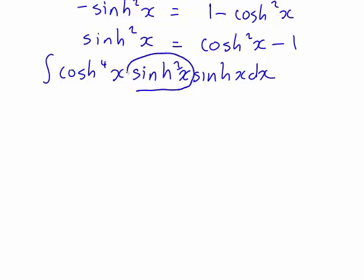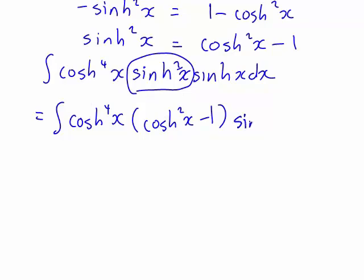So that we now have the integral of cosh⁴(x) times (cosh²(x) minus 1) times sinh(x) dx.